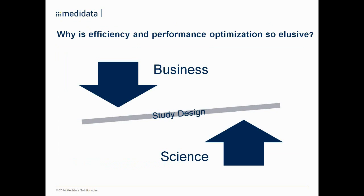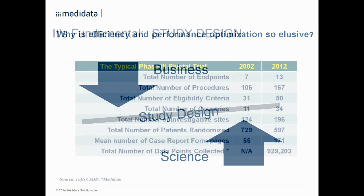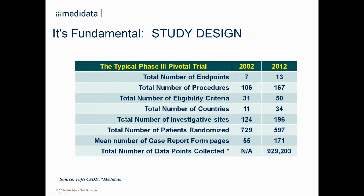So what are the issues affecting this balance between efficiency and performance? We at Medidata believe it comes down to finding the proper balance between the business requirements and the science requirements — understanding why we're doing particular things, but also understanding the impact of adding particular endpoints or outcomes to your study. As we do this, we're increasing the burden on the patient and on the sites by having an ever-growing design complexity.